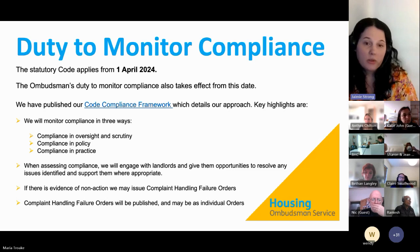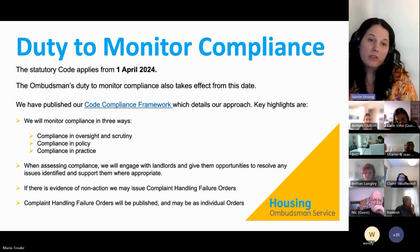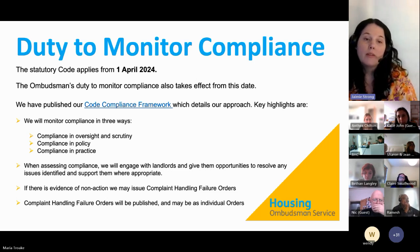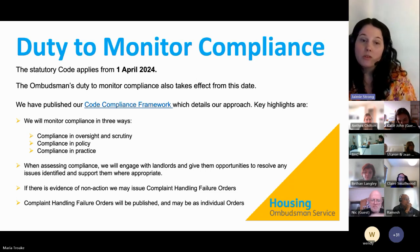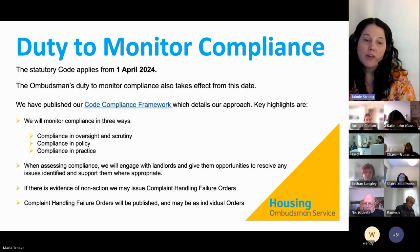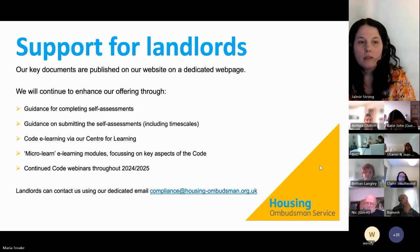When assessing compliance we first ask the landlord to undertake oversight and scrutiny and assure themselves they are compliant. The self-assessment should help a landlord identify whether they meet the code and what changes are needed. If we notice something isn't quite compliant, we will engage with landlords and give them the opportunity to resolve the issues identified. We'll try to support landlords where we can. If a landlord doesn't engage or make the suggested changes, we will issue complaint handling failure orders, which will be published.